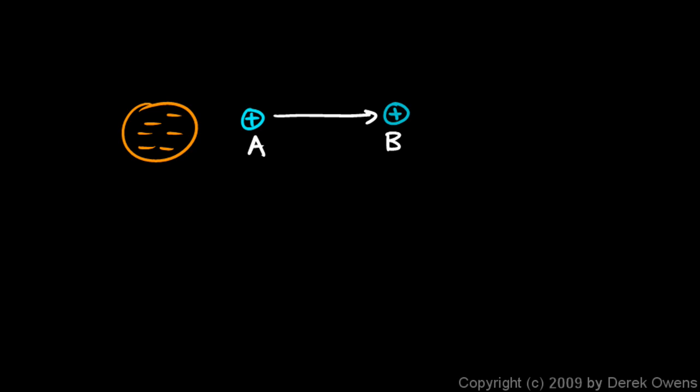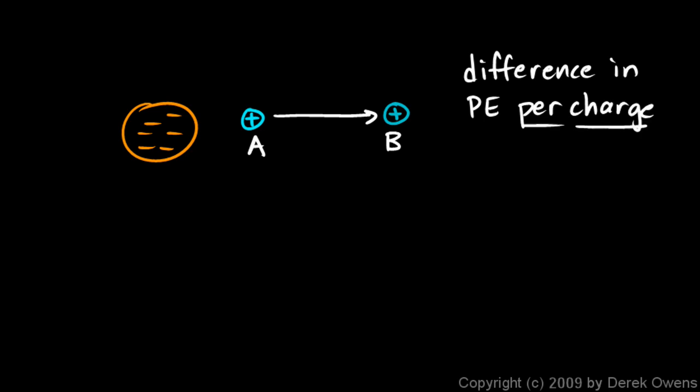Now imagine moving multiple charges from A to B. For each charge we move, there's a change in potential energy, and it makes sense to speak of the difference in potential energy per charge. No matter how much charge we move from A to B, each coulomb of charge will undergo the same change in potential energy. That difference in potential energy per charge is sometimes abbreviated as simply 'potential difference.'